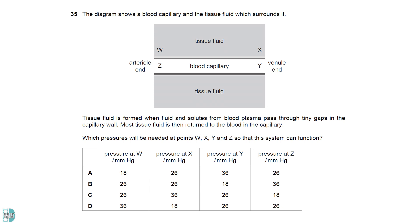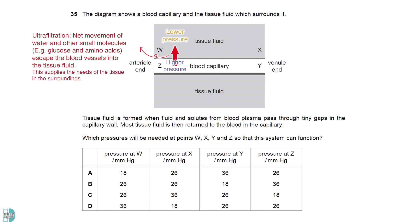For the system to function, Z should have a higher pressure than W. So, ultrafiltration can occur and force water and some small molecules, such as glucose and amino acid to escape the blood vessel, into the tissue fluid. This supplies the need of the tissue in the surroundings. Y should have a lower pressure compared to X, so that the waste products produced by the tissue in the tissue fluid, would enter the blood vessel and get carried away for excretion.